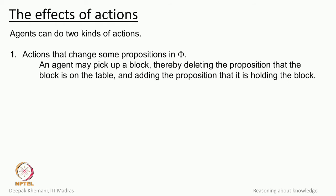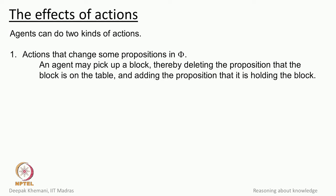Agents can do two kinds of actions. One is that they can change some propositions. For example, if you have a robot going around picking up blocks and putting them elsewhere, at some point it will remove a block from a table — so that proposition will no longer be true — and it will add a new proposition saying it is holding the block. That is the kind of changes the planning community looks at.